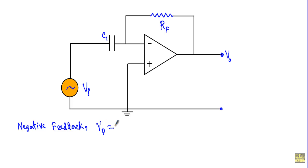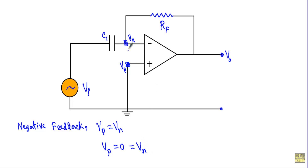That means Vp will be equal to Vn, where Vp is the voltage at the non-inverting terminal to ground. Since this non-inverting terminal is directly grounded, Vp equals 0. Due to negative feedback, Vp equals Vn, so the inverting terminal will also have 0V — it will be virtually grounded.